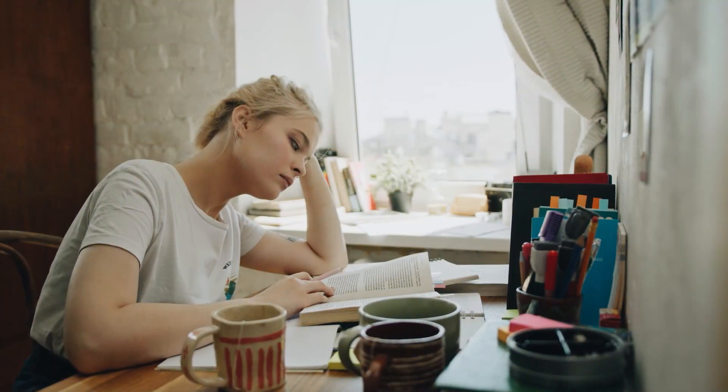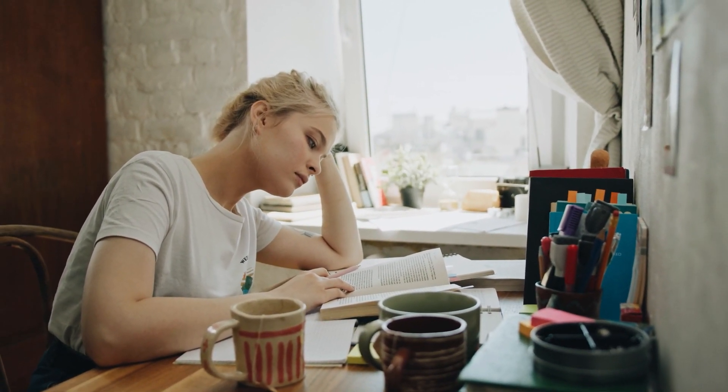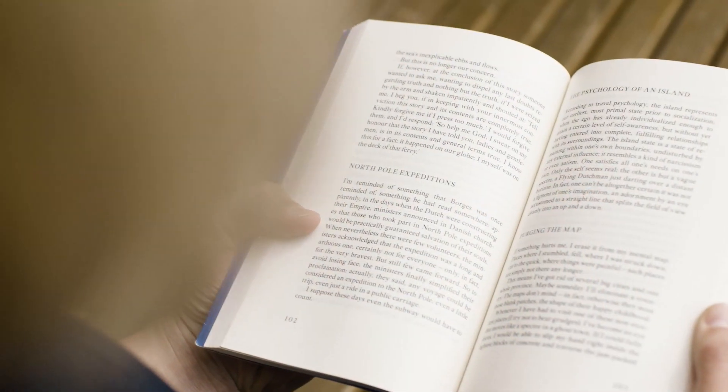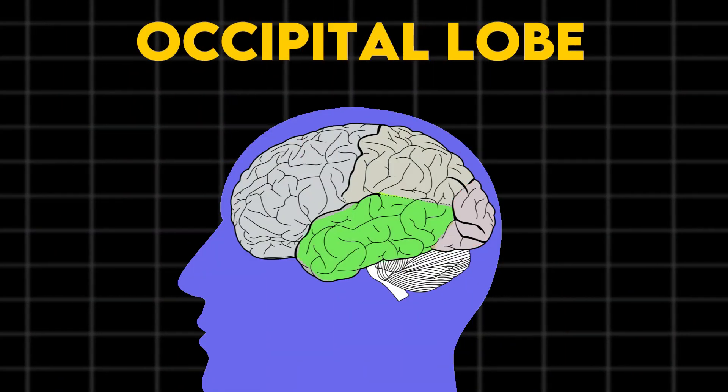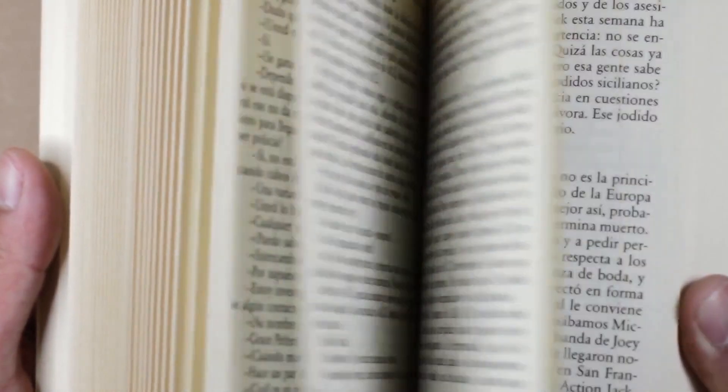A perfect example would be reading. The brain's occipital lobe detects writing and then collaborates with a portion of the temporal lobe to identify the written shapes and symbols.